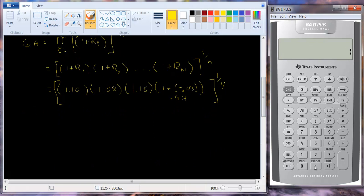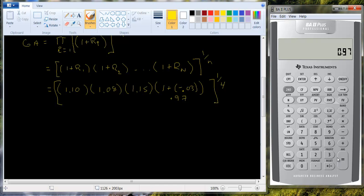So we're going to take 1.10 times 1.08 times 1.15 times 0.97 and then we're going to raise that to the 0.25 power. 1 over 4 is 0.25. We're going to get 1.0729.